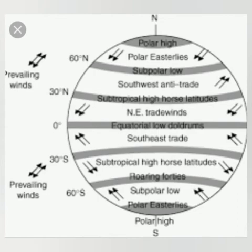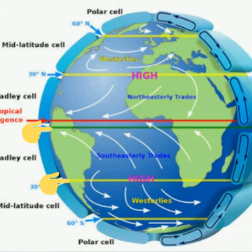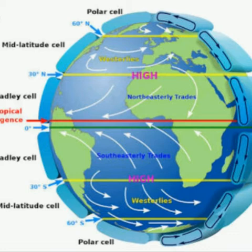Let us see what happens because of the difference in air pressure. The difference in air pressure affects the velocity, that is the speed of the wind. If there is less difference in pressure, winds blow with less velocity. And if the pressure difference is greater, the winds will also blow with greater velocity. So less pressure difference means less velocity, and more pressure difference means more velocity.